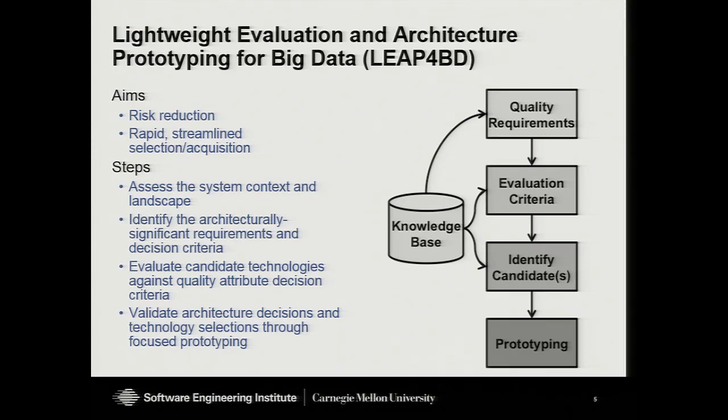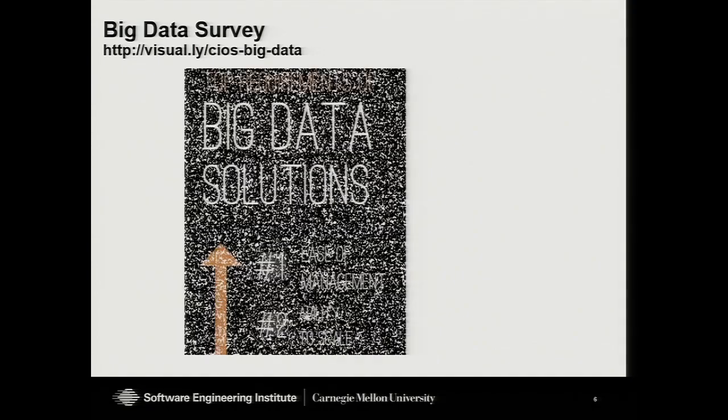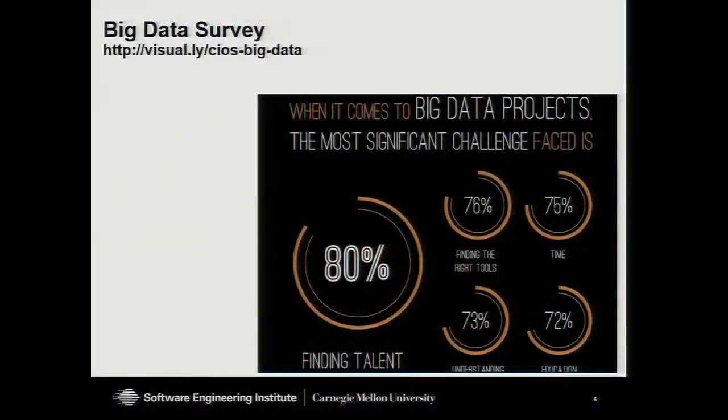Looking at how this plays out in practice: a survey of CIOs identified that big data projects struggle with inaccurate scope, ease of management, and scalability — issues that LEAP for Big Data addresses. But the biggest problem — reported by 80% of them — is they can't find the talent to work in big data. These are commercial organizations that can afford to pay for talent. Government organizations, which are far more resource-constrained, are at an even greater disadvantage.